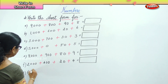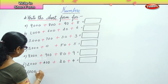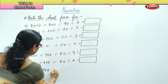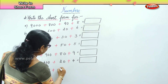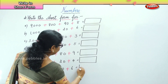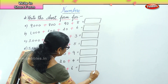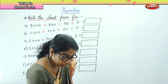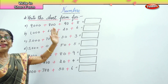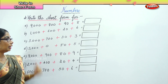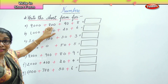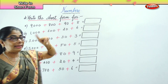Six thousand, plus seven hundred, plus fifty, plus six. Okay, now what we are going to do is we are going to write this expanded form into the short form.